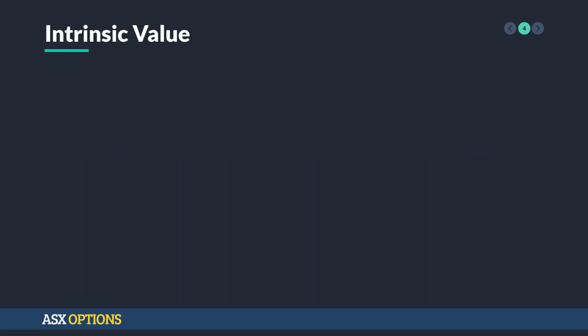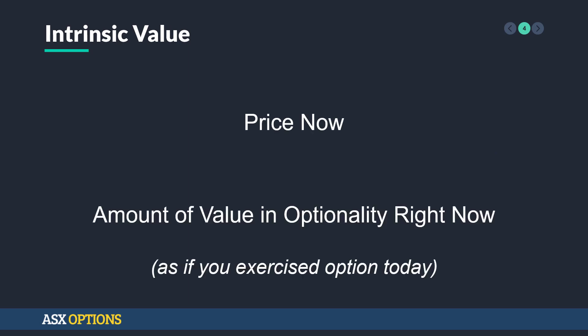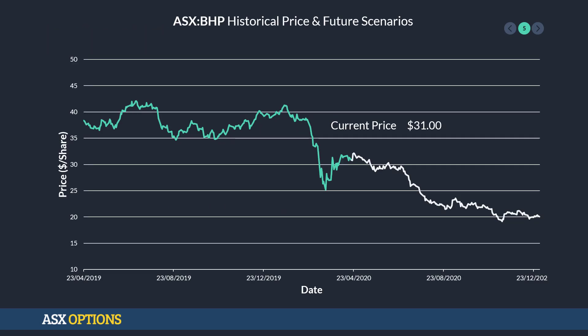Let's break that down a little bit more. Intrinsic value is based off the price right now, and I like to think of it as the amount of value in the optionality right now — as if you were exercising the option today, how much value could you get out of it? Let's see what that means on a graph.